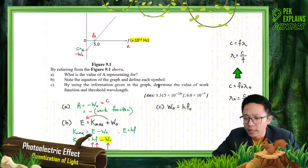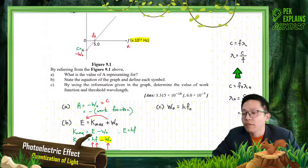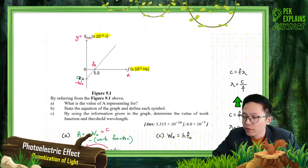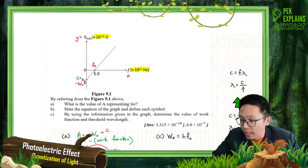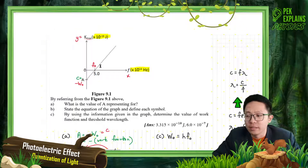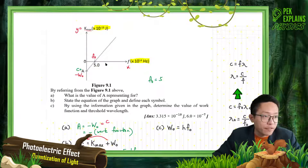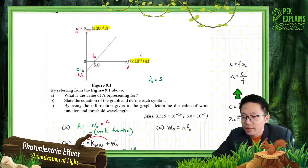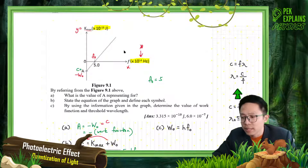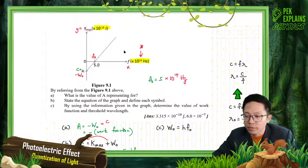By using the information given in the graph, determine the value of the work function and threshold wavelength. We can get the work function from the x-axis — the x-intercept is the threshold frequency F0. So F0 is equal to 5. But remember: you must check the axis — it has an exponent. Many students just put 5, which is wrong. This threshold frequency has exponent 14, so F0 = 5 × 10^14.